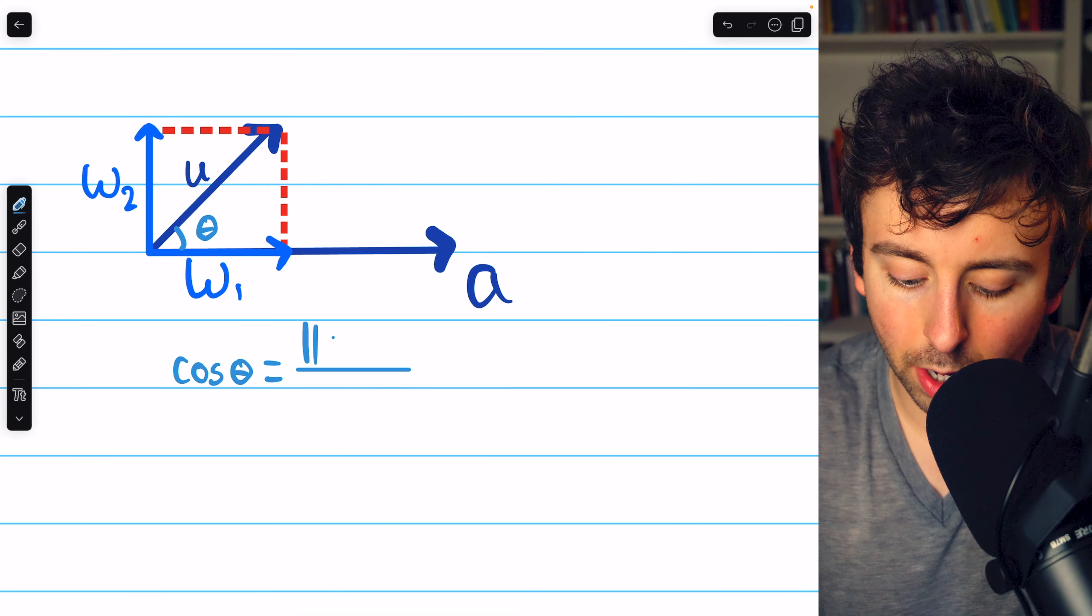We also know how to calculate w2. w2 is called the vector component of u that is orthogonal to a, and it's found by taking u and subtracting the projection of u on a. So it's just u minus that expression. That's a lot of words and notation. Let's do a quick example.